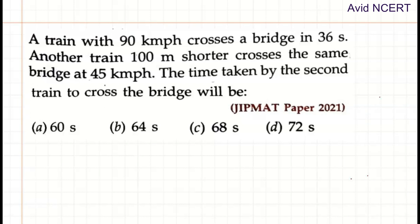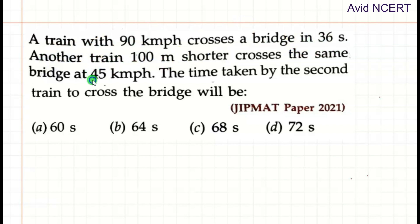Hello and welcome to my channel, this is Geetan. We will be solving a problem from JIPMAT 2021 question paper. A train with 90 km per hour crosses a bridge in 36 seconds. Another train 100 meters shorter crosses the same bridge at 45 km per hour. The time taken by the second train to cross the bridge will be?